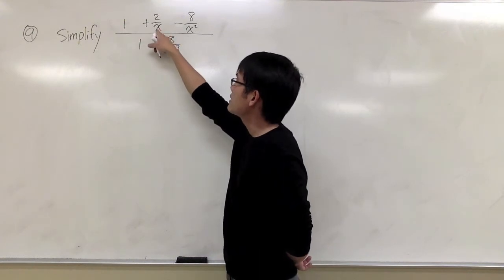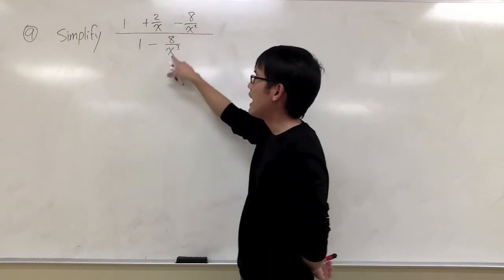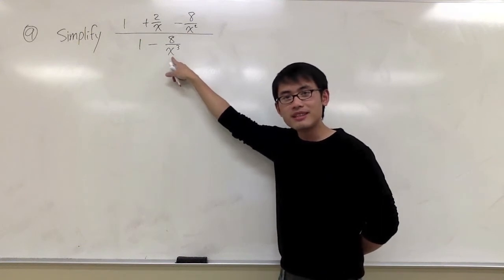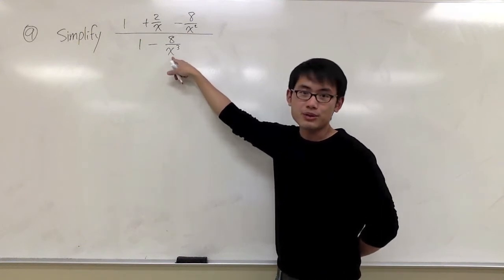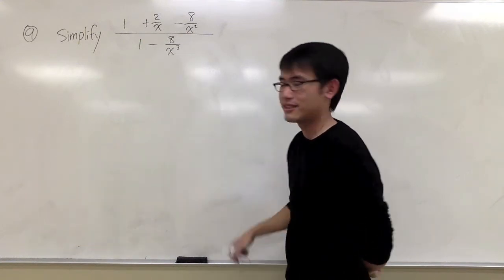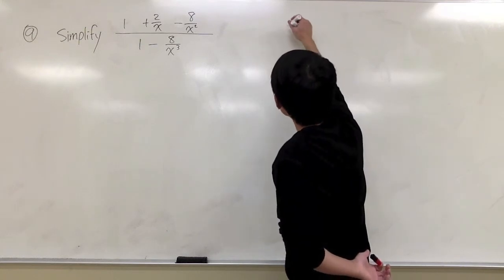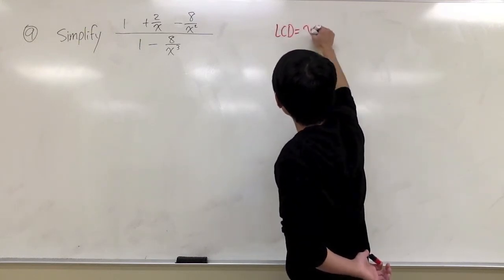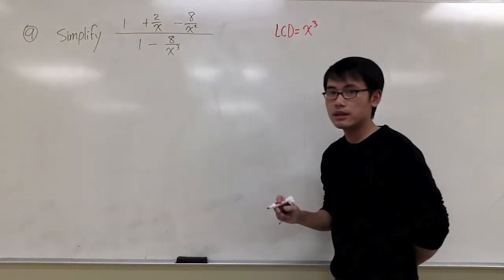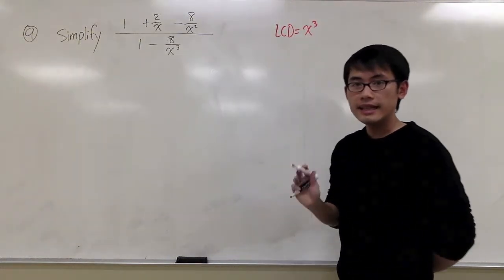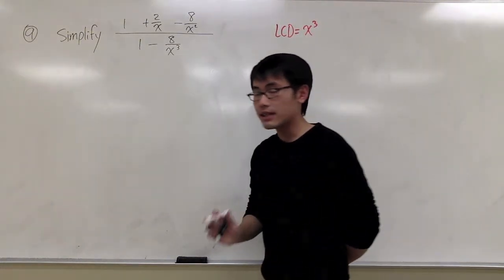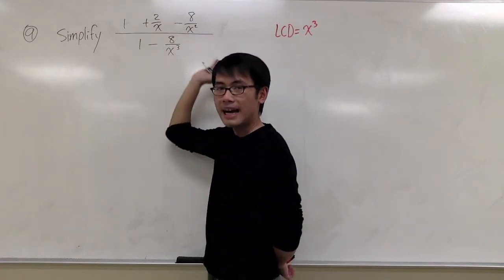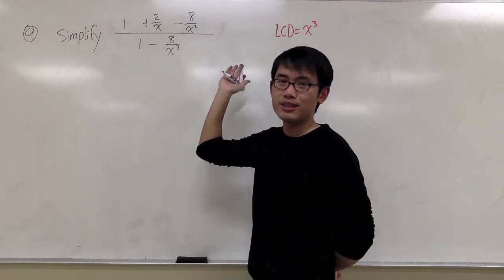I have x, x squared, and x to the third power. In this case, the LCD will be x to the third power — the highest power of x. So the LCD is x to the third power. What we are going to do next is multiply everything by the LCD, which is x to the third power.